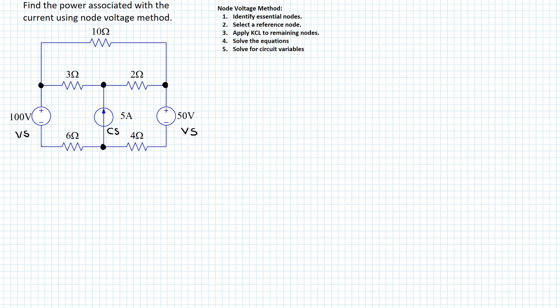Step two is to select one of the essential nodes and make it a reference node. In this example, we make this node the reference node, indicated by the ground symbol, and then label the remaining nodes as V1, V2, and V3.